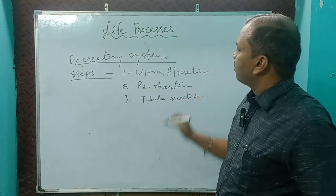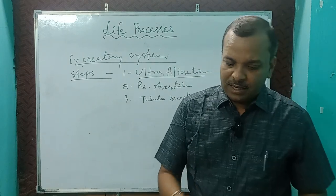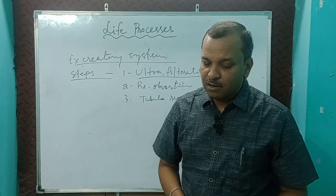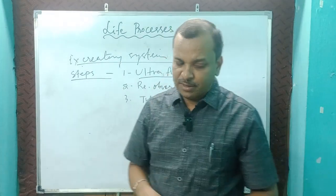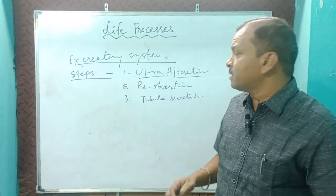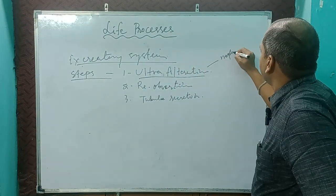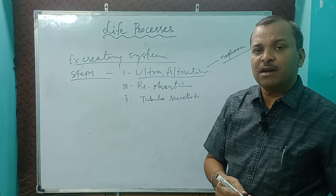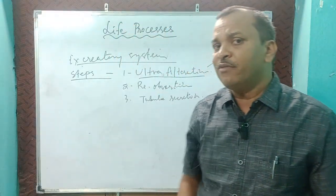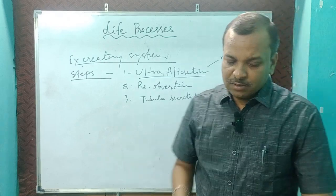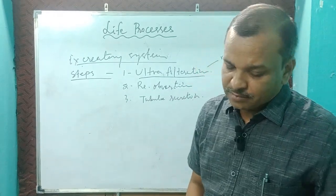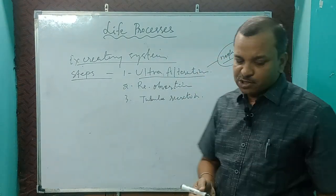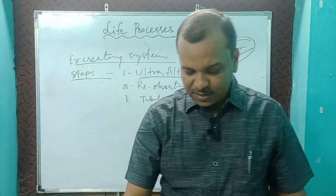Ultra-filtration occurs in the glomerulus. The glomerulus is the major part that filters. It is present in the nephron. The nephron is the structural and functional unit of the kidney — this is an important exam question. The site of urine formation is the nephron.